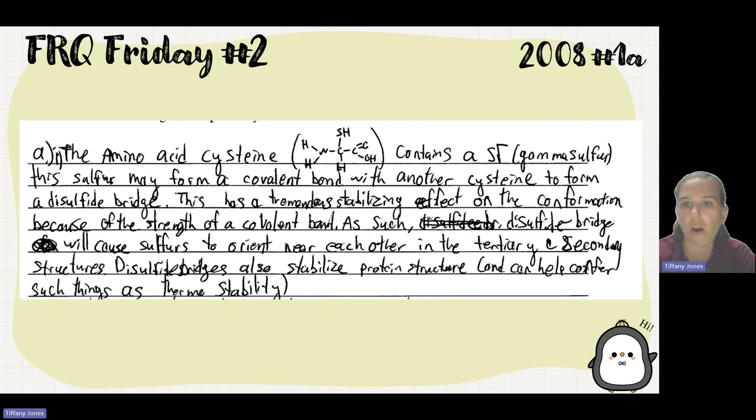Van der Waals involves the unequal electron cloud with R groups, hydrophobic interaction with non-polar R groups, and ionic with charged R groups. The student talks about cysteine's sulfur forming a covalent bond with another cysteine forming the disulfide linkage. There's a lot of strength in this that allows tertiary structure. They mention a wrong statement about secondary but since it doesn't take away from their correct explanations, they got the point.